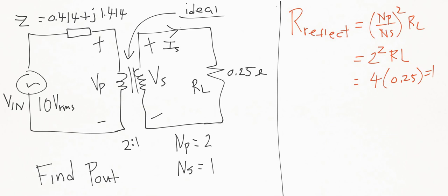Now we can get the total impedance being this reflected resistance plus the original Z. When you add those together and put them into polar coordinates, you get 2 angle 45 degrees. We're going to drop the angle 45 degrees and just call it 2 ohms.